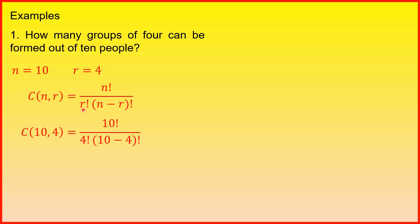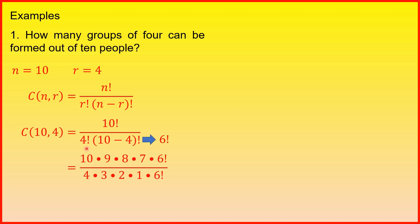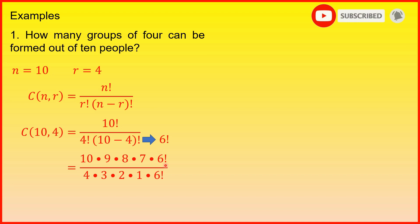Then, isubstitute natin yung mga given values sa ating formula. C(10, 4) is equal to 10 factorial over 4 factorial times (10 minus 4) factorial. Then, 10 minus 4 is equal to 6 factorial. Ang ating denominator na 4 factorial is equal to 4 times 3 times 2 times 1. At yung ating numerator na 10 factorial, that is 10 times 9 times 8 times 7 times 6 factorial. Hanggang 6 factorial na lang ilagay natin dito kasi meron naman siyang kapareho sa denominator na kung saan pwede na natin i-cancel ito.